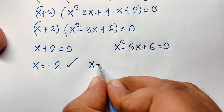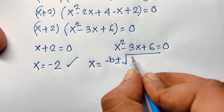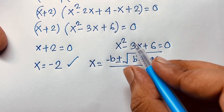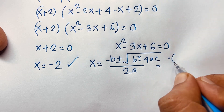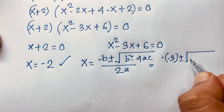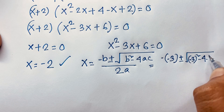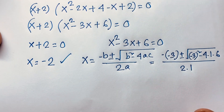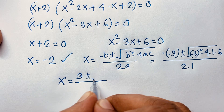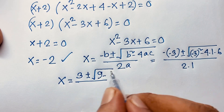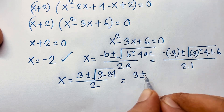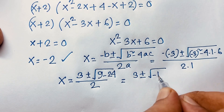So what is x here? We use the quadratic formula: x equals negative b plus or minus square root of b squared minus 4ac, over 2a. Here b is negative 3, a is 1, c is 6. So x equals minus of negative 3, plus or minus square root of negative 3 whole square minus 4 times 1 times 6, over 2 times 1. That gives 3 plus or minus square root of 9 minus 24, over 2, which is 3 plus or minus square root of negative 15, over 2.